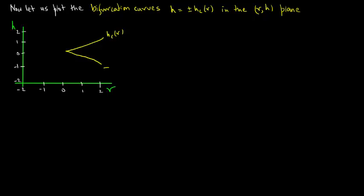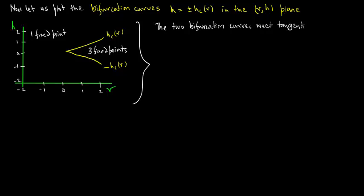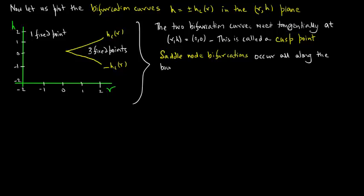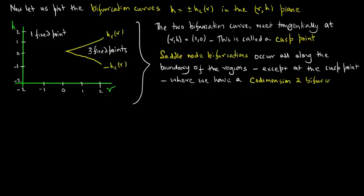That's h versus r. That's h_critical, that's minus h_critical. That's where we have three fixed points and there we have one fixed point. The two bifurcation curves meet tangentially at (r,h) equals (0,0) and this is called a cusp point. Saddle node bifurcations occur along the boundary of the regions except at the cusp point.